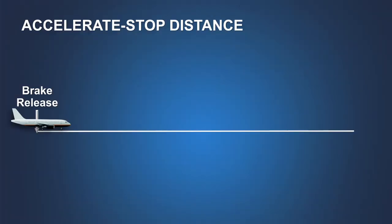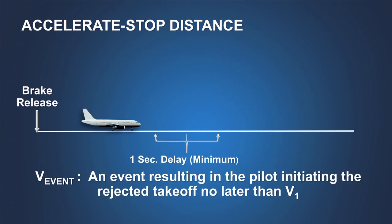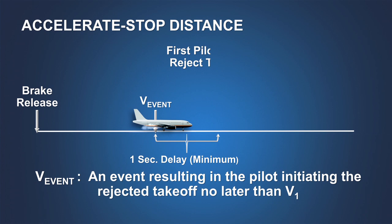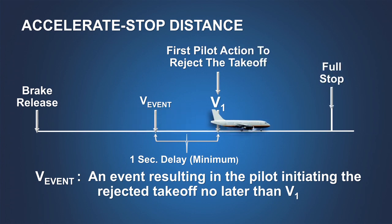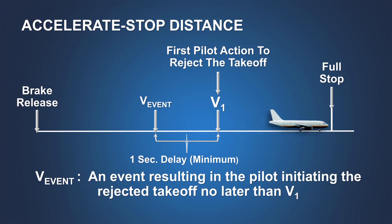Of particular importance is accelerate stop distance, or the distance required to accelerate to a point in the takeoff, then in response to an event, take the first action to reject the takeoff at a speed no greater than V1 and to bring the airplane safely to a stop.